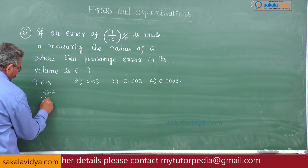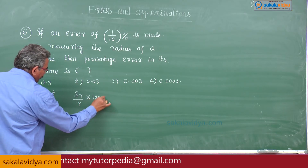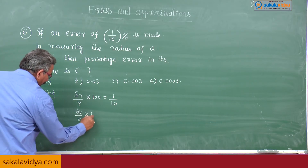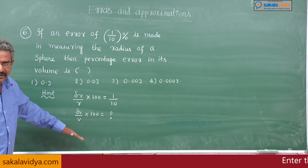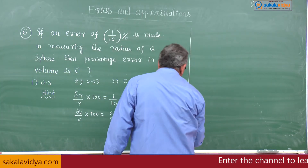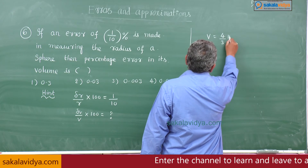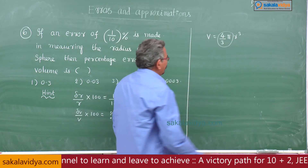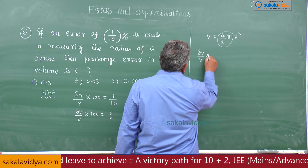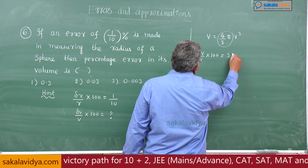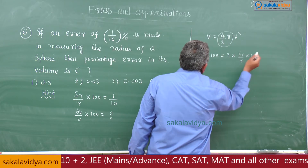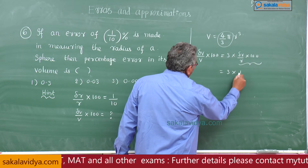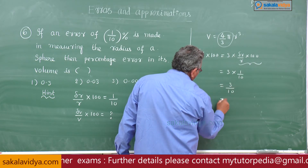Given: delta r by r into 100 is equal to 1 by 10. We need to find delta v by v into 100. We know v equals 4 by 3 pi r cube — the constant 4 by 3 pi can be left. Using the shortcut: delta v by v into 100 equals 3 times delta r by r into 100, since the dimension of r is 3. So this equals 3 into 1 by 10, which is 3 by 10, that is 0.3 percent.